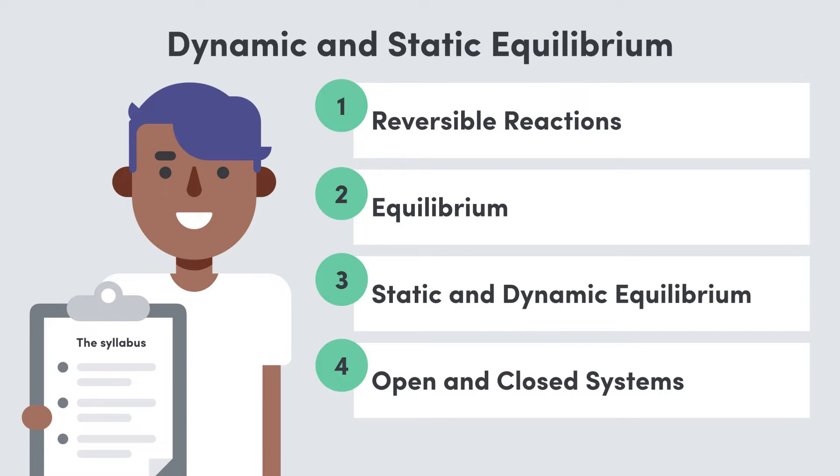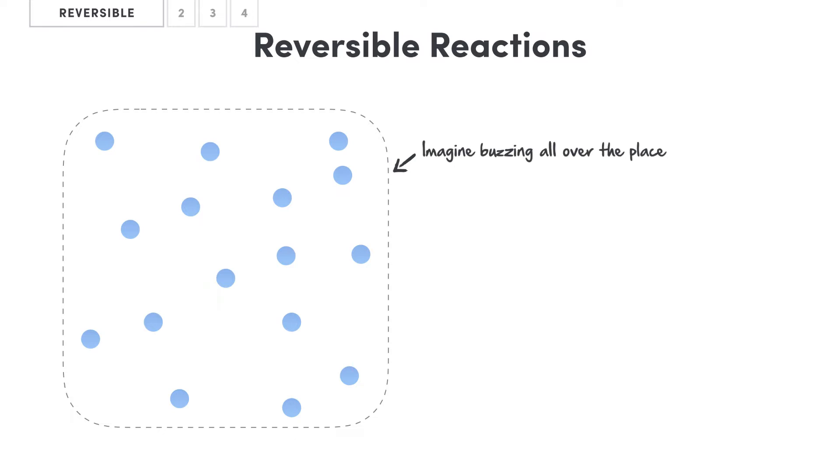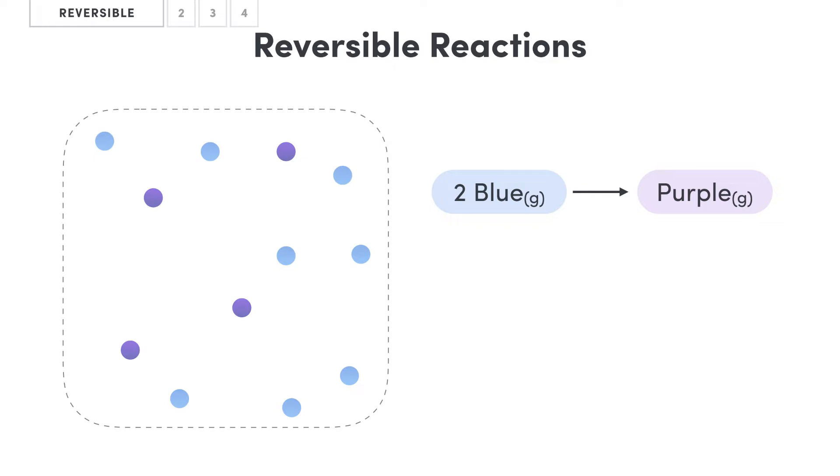So the first thing that we need to understand is what it means to have a reversible reaction. Now here on the screen we have a glass box with some gas molecules inside which would typically be buzzing all over the place if we depicted them accurately. And these gas molecules are reacting with the compound which we'll just call blue, reacting and converting into purple just as we see here. Now these colors could represent any chemical species such as nitrogen dioxide to dinitrogen tetroxide for example, but we'll just represent them with colors to simplify the illustration.